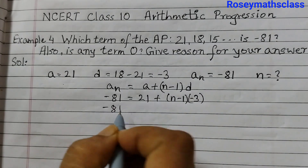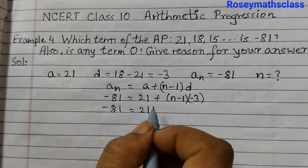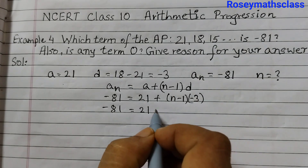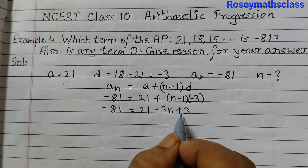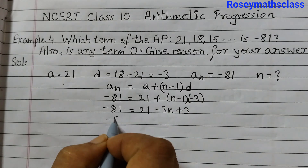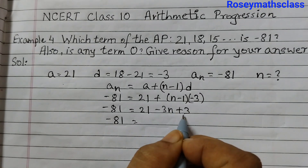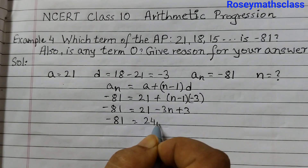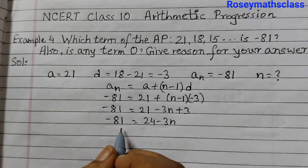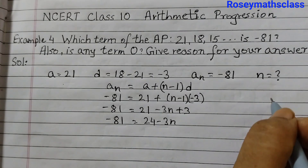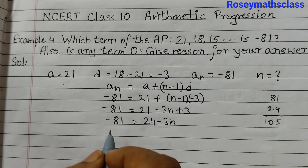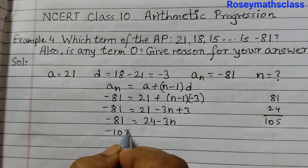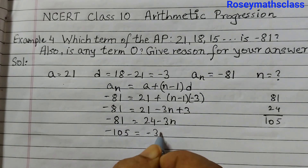Simplifying: minus 81 equals 21 plus minus 3N plus 3 — minus times minus becomes plus. So minus 81 equals 21 plus 3, which is 24, minus 3N. Taking 24 to the other side: minus 81 minus 24 gives minus 105, equal to minus 3N.